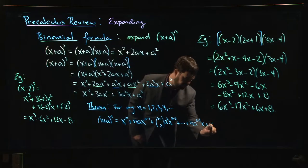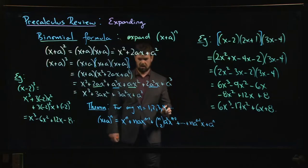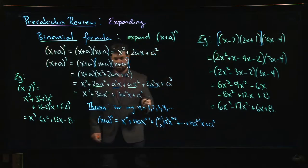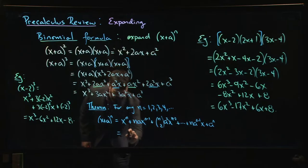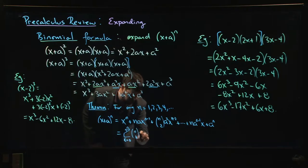Some people like to remember this—if you're comfortable with summation notation, you can write this as the sum from k = 0 to n of (n choose k) times x^(n-k) times a^k. That's how some people will remember it.